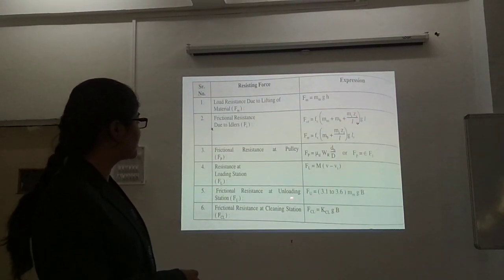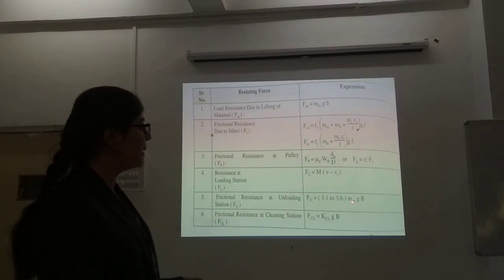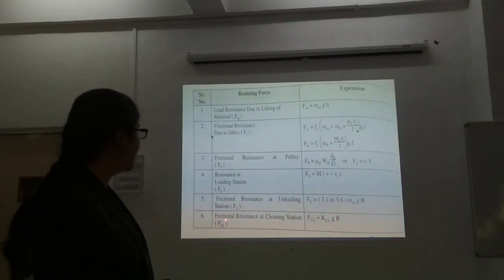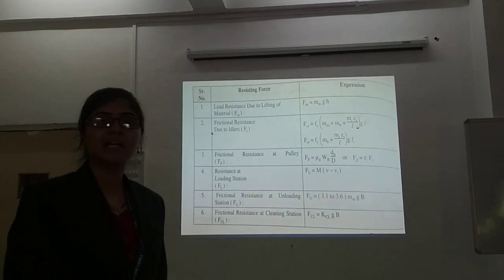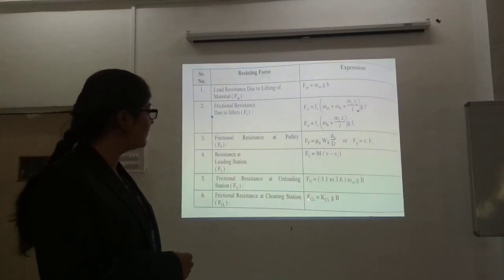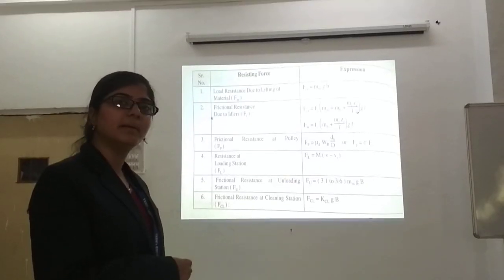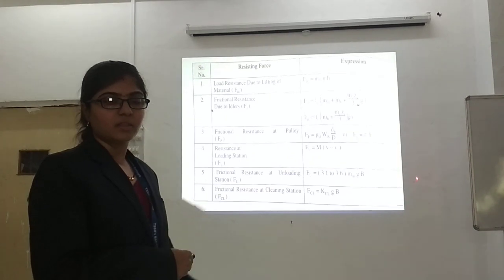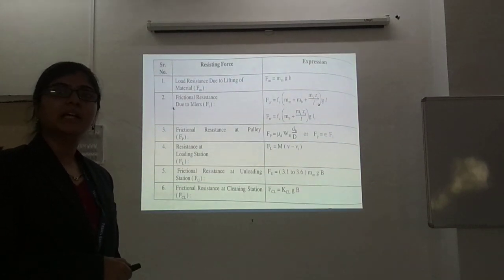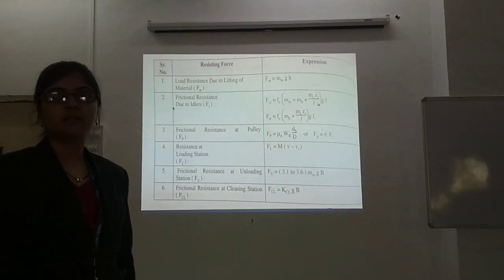Next is the frictional resistance at the unloading station, given by 3.1 to 3.6 × MM, where MM is the mass of material per unit length and B is the width of the belt. Next is the frictional resistance at the cleaning station — because we use a cleaner to clean the belt, it offers resistance. It is given by Fcl = Kcl × G × B, where B is the width of the belt in meters and Kcl is the constant of the cleaning device. Now we will see in practice how to use these formulas over one conveyor layout.